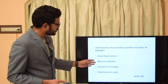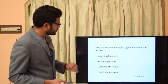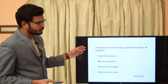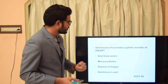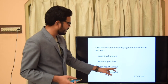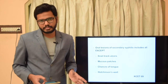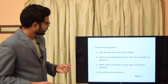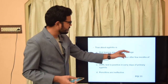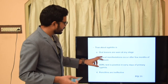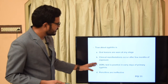Oral lesions of secondary syphilis include all except: snail-track ulcers, mucous patches, chancre of tongue, or Hutchinson's teeth? The question asks for manifestations of secondary syphilis, so the answer is chancre, which is characteristically seen in primary syphilis, not secondary.